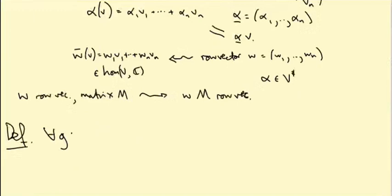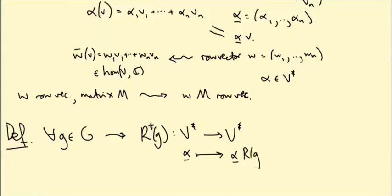For each G in G, I'm supposed to give you a map R star G from V dual to V dual. And this is going to send a row vector alpha underline to alpha underline R(G inverse). So I'm multiplying on the right but not by R(G), instead by R(G inverse). So this is what I'm defining to be R star G of alpha.